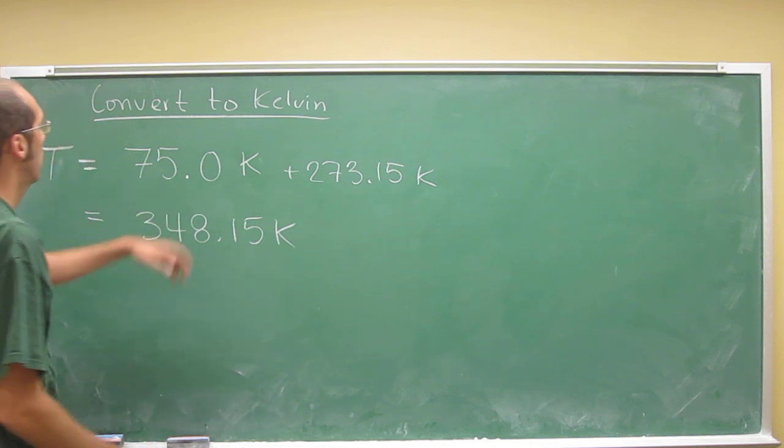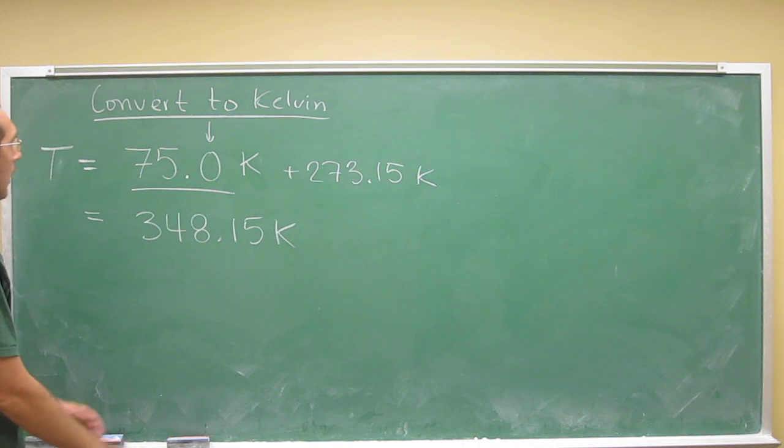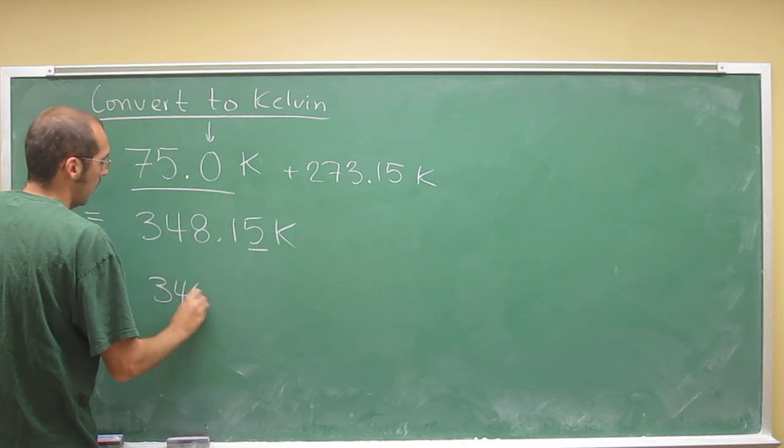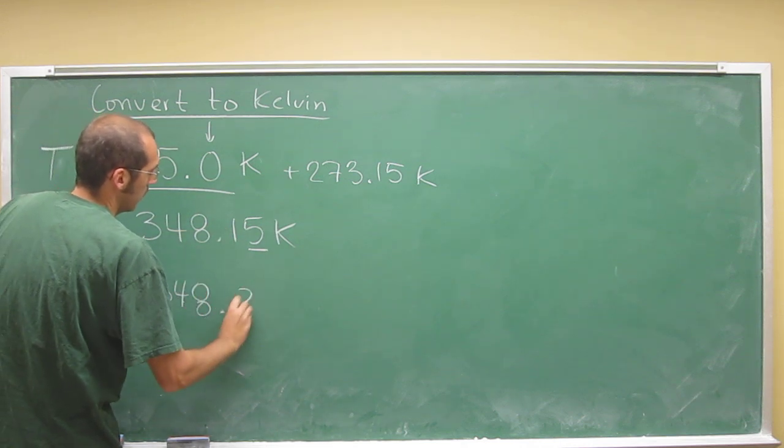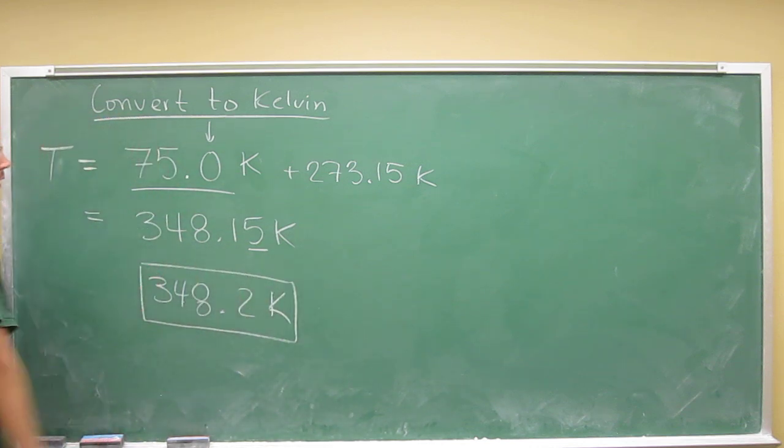And if we look at the number that we've been given, it's got one digit after the decimal point. Remember, adding sig figs. So we want to round that last digit up. So it's 348.2 Kelvin. So that would be our answer.